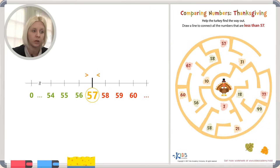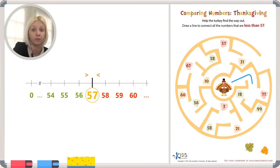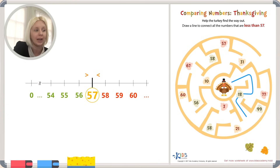Let's think about where we're going to go. Let's start at the turkey — he's trying to find his way out. Do we go to the 18 or the 77? Is 77 less than 57? No, it's greater than 57. What about 18? Is that less than 57? Yes. So we're going to go down to 18, which would be on this side of the number line.